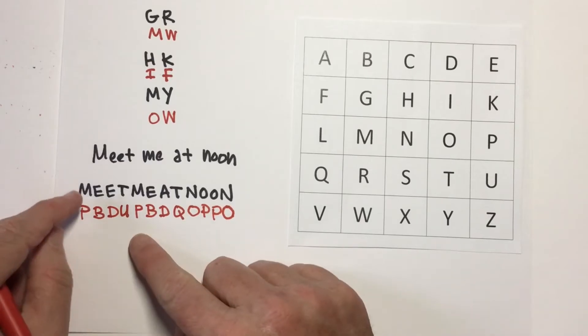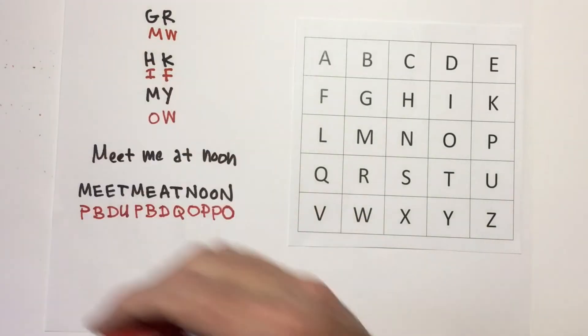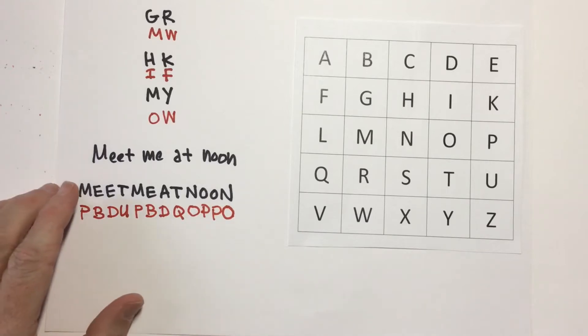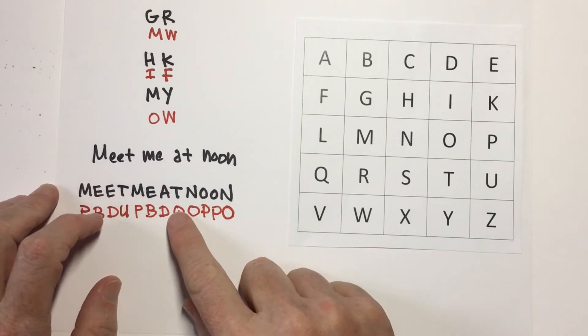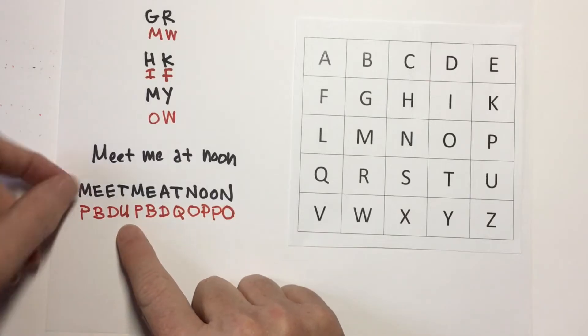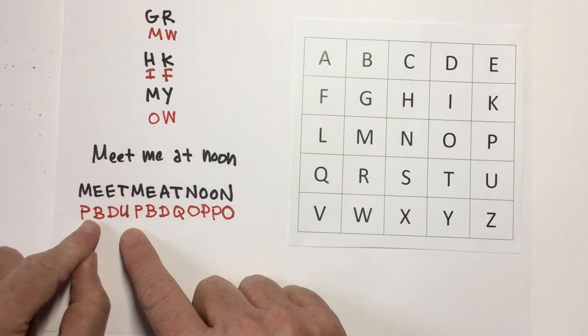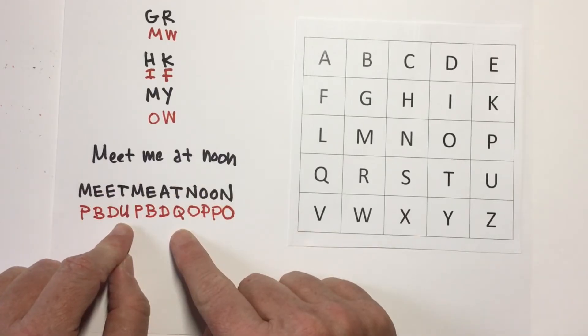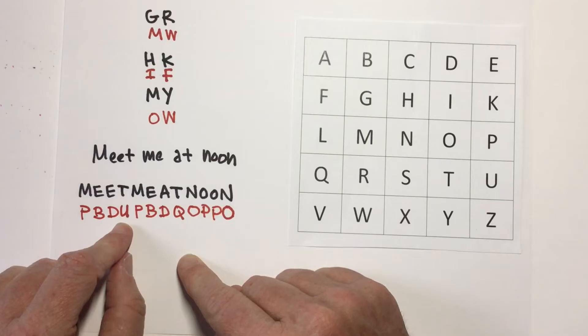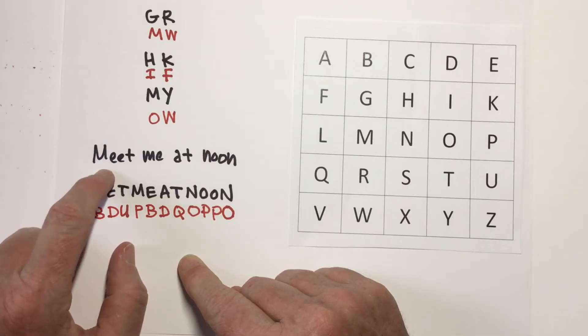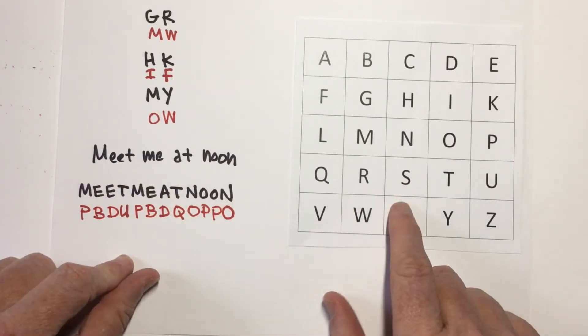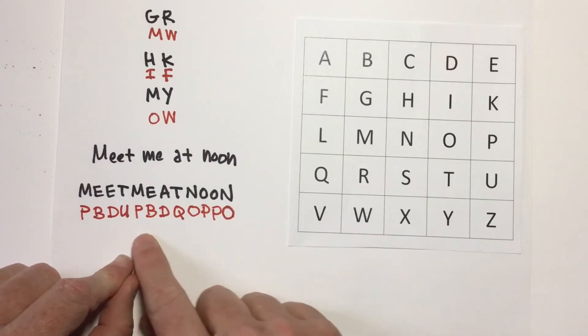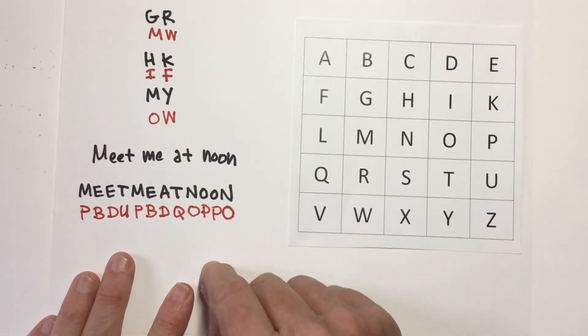Now, what's fiendishly clever about this, is you will note that we have several repeated letters here. We have M's, and N's, and E's, and T's. But note that the E's, for instance, are encoded with different letters. This E is a B. This E is a D. This T is a U, but this T is a Q. That makes a code very difficult to solve. If I can't know for sure that each letter in my code represents a specific letter in the alphabet, that really increases the difficulty. That's why I like this code. It's easy to write, but it's fiendishly clever. And there are some things we can do to make it even more devilish.